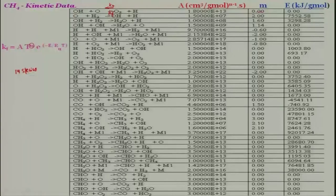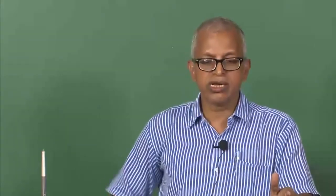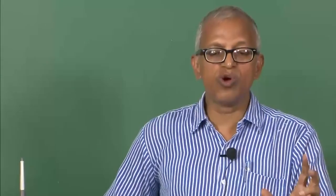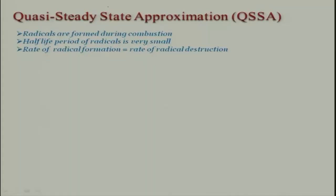Therefore, there is a need to reduce this mechanism and come to global kinetics, or maybe two-step, three-step, or five-step chemistry — various models are there. For that we will discuss two methodologies. There are several others also, but one is the quasi-steady-state approximation method.